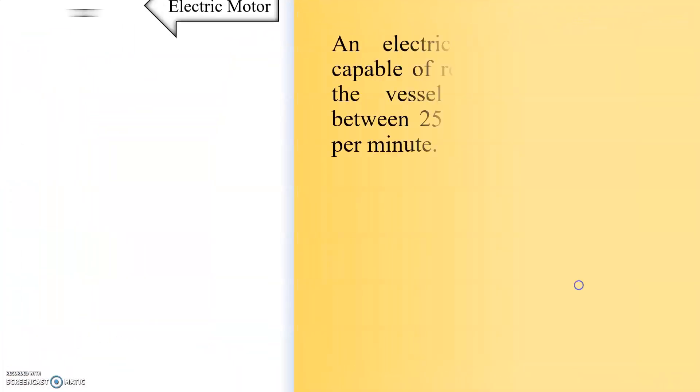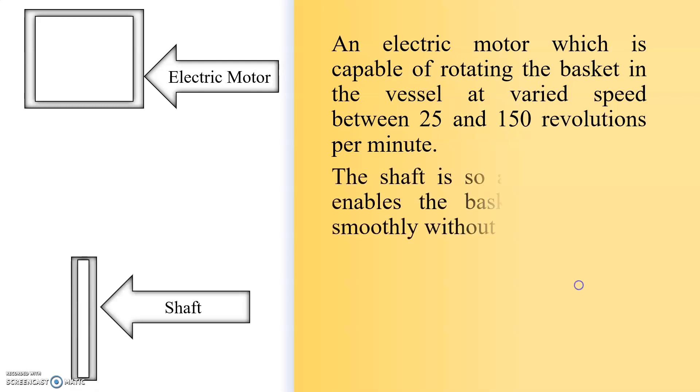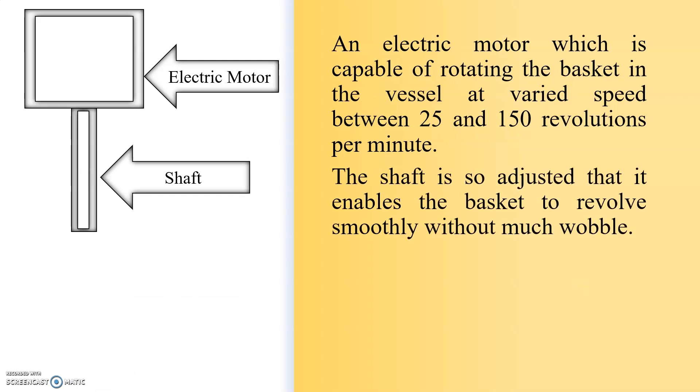The next part is an electric motor which is capable of rotating the basket in the vessel at varied speed between 25 and 150 revolutions per minute. The shaft is so adjusted that it enables the basket to revolve smoothly without much wobble. Here in the diagram you can see the electric motor and shaft.